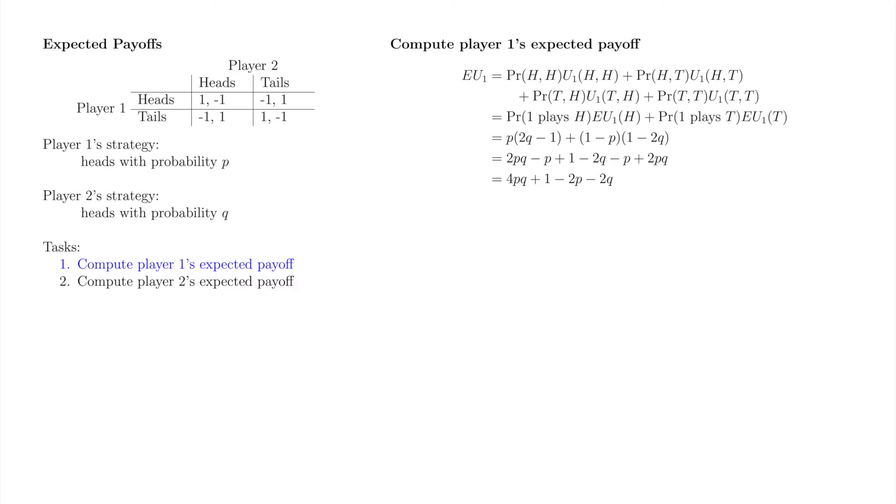You can check that if p equals 1 and q equals 1, i.e. both players play heads, player one's expected payoff is 1. This expected payoff matches player one's payoff from heads heads in the matrix, so we can be encouraged that our answer is accurate.